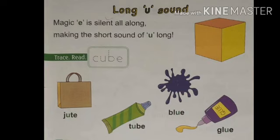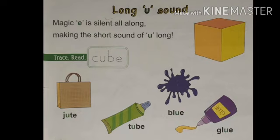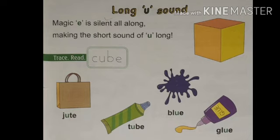Here you can see long U sound words. Magic E is silent all along, making the short sound of U long. Here you can see what is called Magic E. The E letter has worked here as magic. E is silent — when we pronounce the word, E's sound is not coming. But because of E, the short U sound changes to a long U sound.